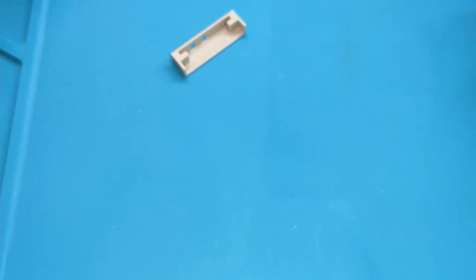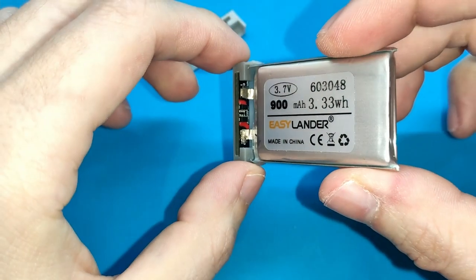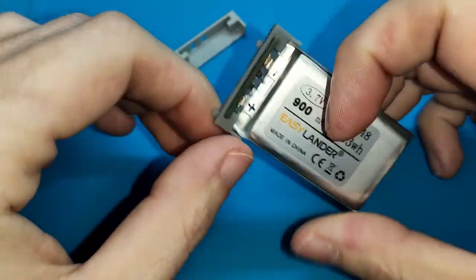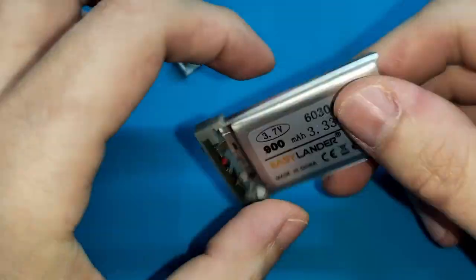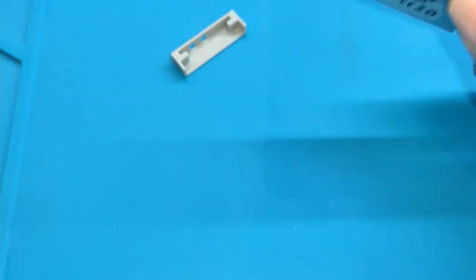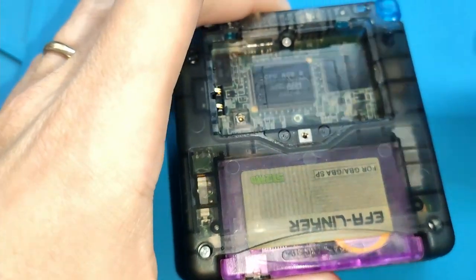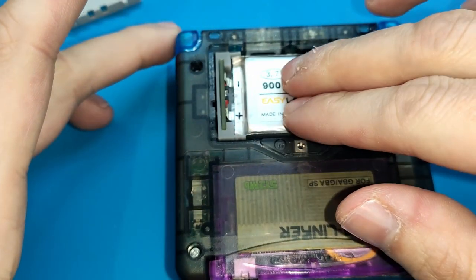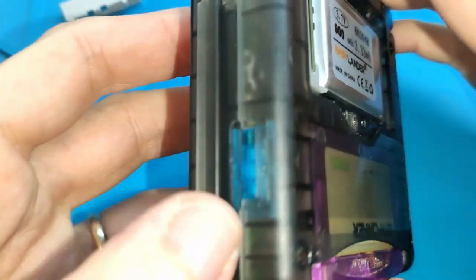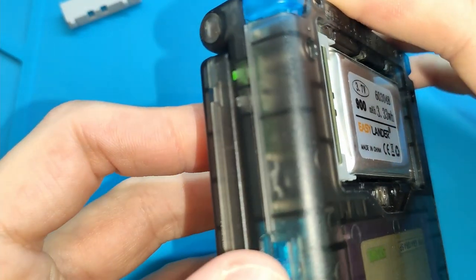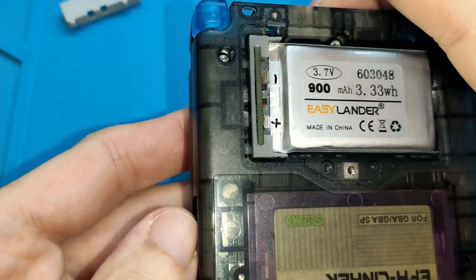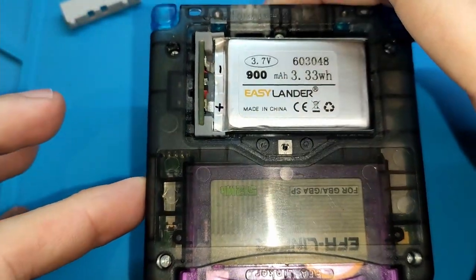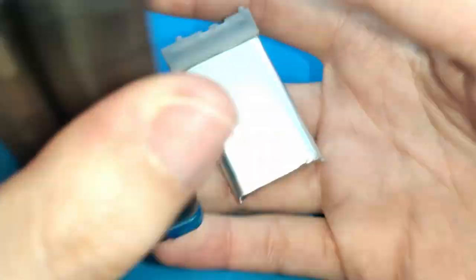I can show you another battery that is done here. It's like this. We don't have cables, so we just need to slide it in place, and then we can turn on the video game, the SP. Only that. We don't need anything else. So this kit is very easy to solder.